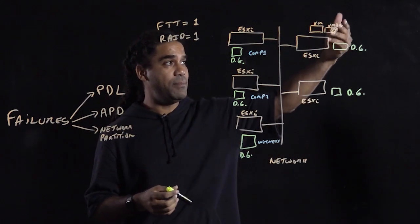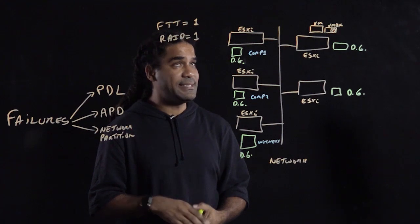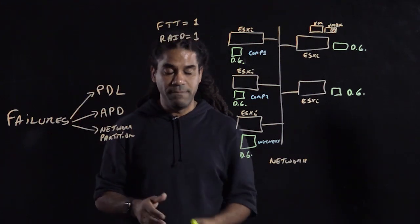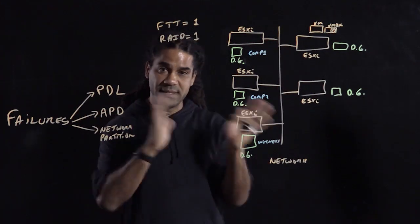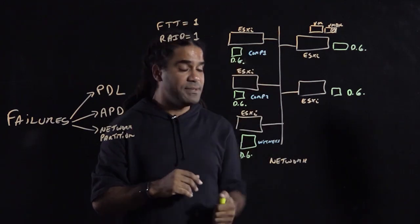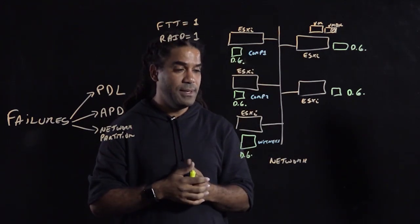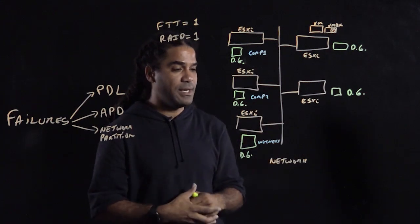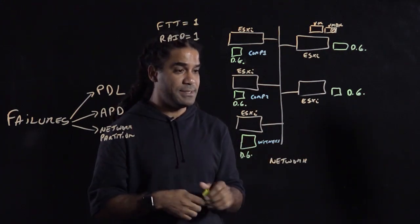We're going to assume we have a VM with a VMDK object that has an FTT policy of 1 and a RAID of 1. What I will describe will be similar to the other types of FTT processes, options that you have for the SPBM. So just to keep it simple, use one with a RAID 1. It's easy to see.